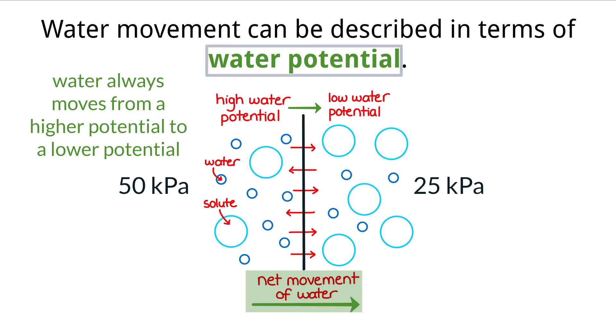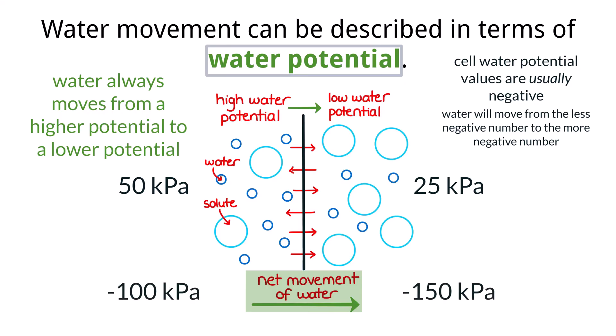This will minimize the total potential energy which is a driving force behind the movement. When specifically looking at water potentials within cells, they are usually in the negatives. Because that is the case, water will move from the less negative number to the more negative number, like from negative 100 to negative 150 kilopascals, which is from a higher potential to a lower potential.